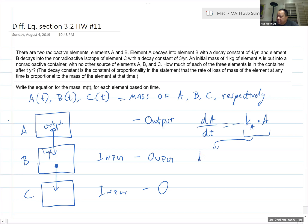So dB/dt is equal to positive K_A times A minus, and then the output is K_B times B. And this output goes where? It goes into C. So the output of B becomes the input of C. dC/dt is equal to K_B times B.